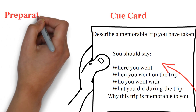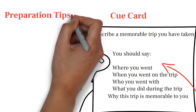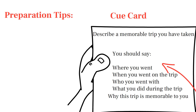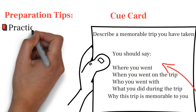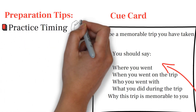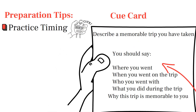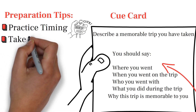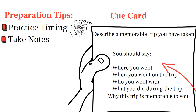To excel in IELTS Part 2, consider the following tips. Practice timing: use a timer to practice speaking for one to two minutes on various topics — this will help you manage your time effectively during the exam. Take notes: during the one-minute preparation time, make concise notes or an outline of what you plan to say, which will help you stay on track and cover all the prompts.